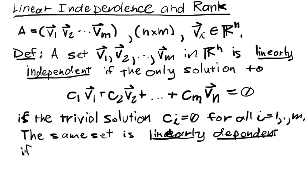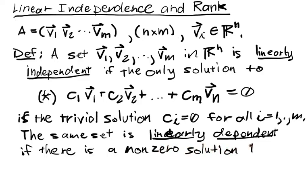So the same collection or the same set of Vi's is linearly dependent if, we'll call this equation star, there is a non-zero solution to star. So one way to think about this, let's say that C1 is non-zero and we have this sum here.